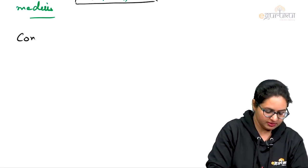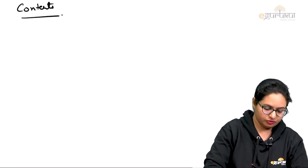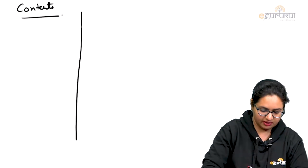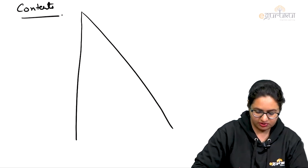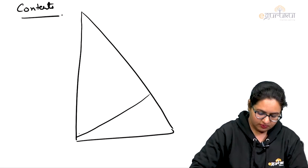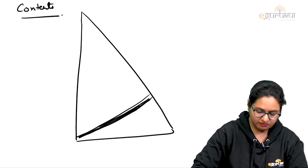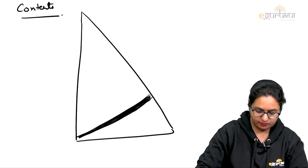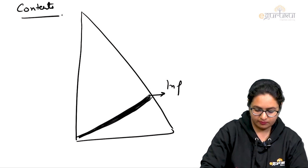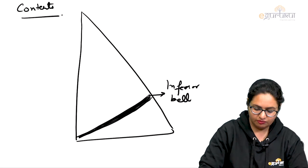Now we will come to the contents of this posterior triangle. We will draw a schematic diagram. The muscle dividing it into two subdivisions is the inferior belly of omohyoid.